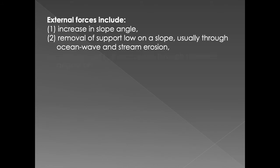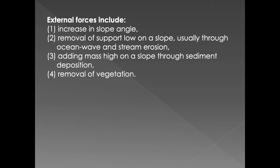The external forces that affect the slope include the increase in slope angle, removal of support low down at the slope — for example, when waves underpin a cliff, the overhanging rock materials cannot be supported and fall down. Also, adding mass on the slope by building up sediments at the top creates momentum and the material slips down. Removal of vegetation is also a factor because vegetation binds the soil, keeping it together through root systems.